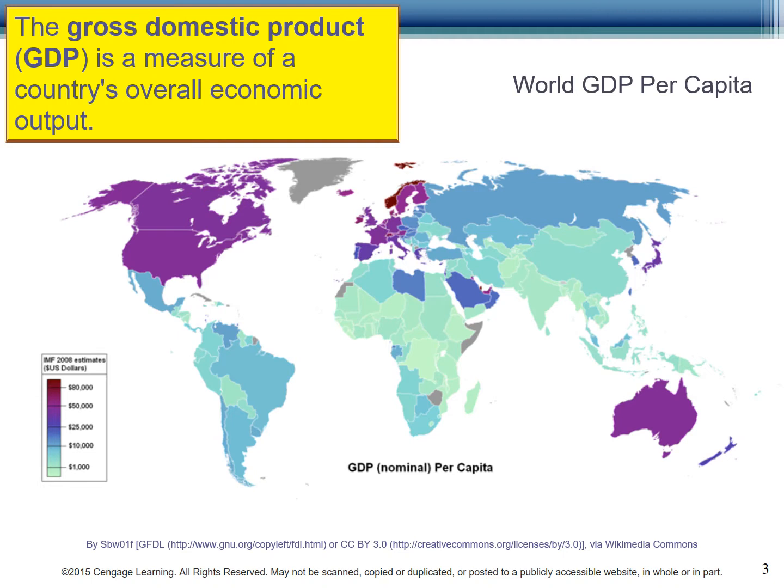the more likely they are to have access to computers with internet connections, cell phones with searching capabilities, tablets for watching movies, and so forth. Thus, as GDP increases, the digital divide decreases. You can see world GDP in this map. The darker the color on the map, the higher the GDP.